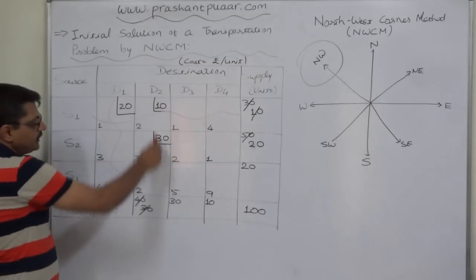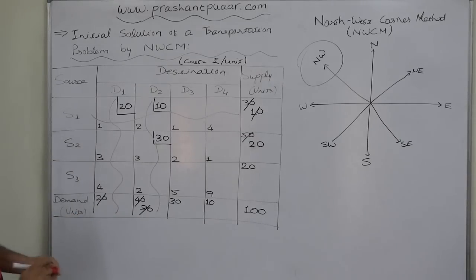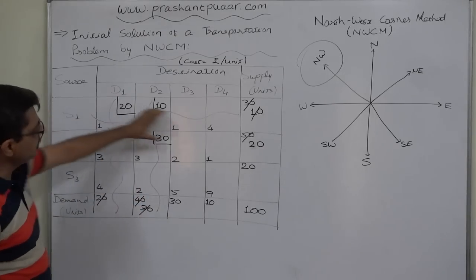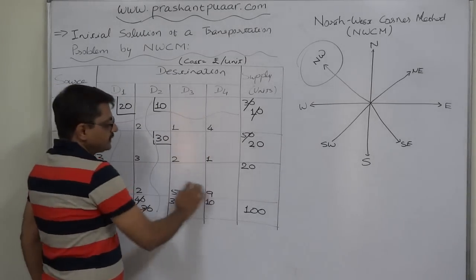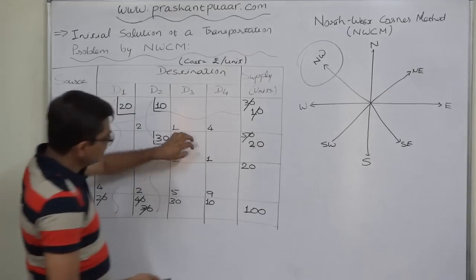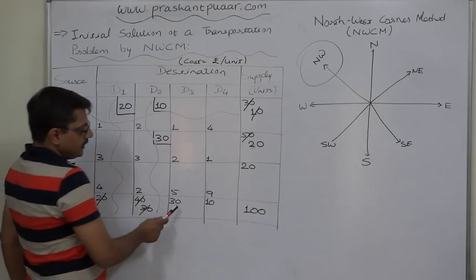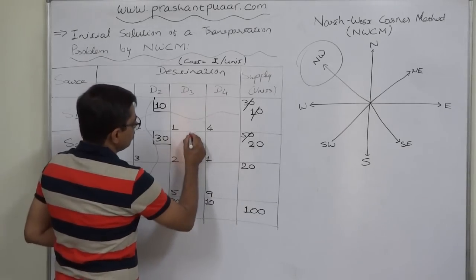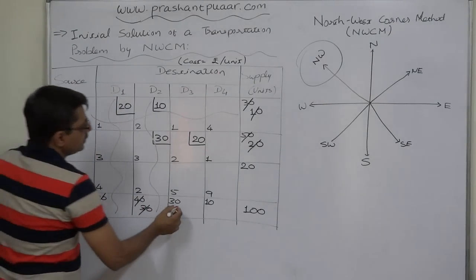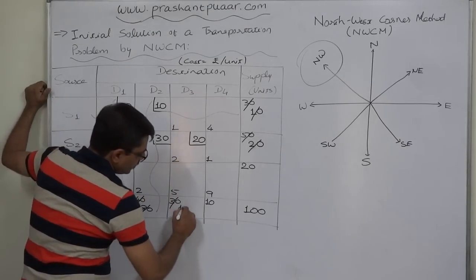We cancel column D2 since its demand has been satisfied. We also exclude row S1 and column D1 and D2 from further consideration. The northwest corner of the remaining table is cell 23. We make allocation there: demand of D3 is 30 units, supply from S2 is 20 units — whichever is lower is 20. So we transport 20 units from S2 to D3. S2's supply is now exhausted, and D3 has an unsatisfied demand of 10 units remaining.